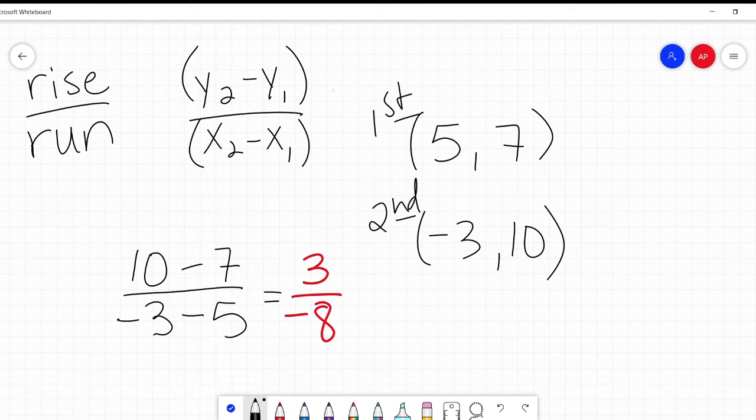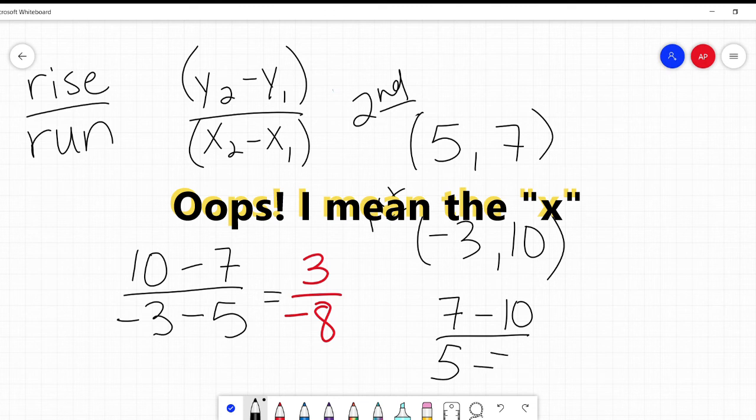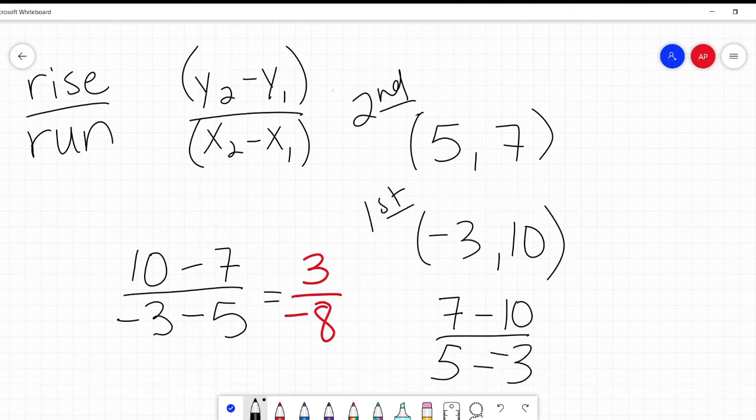All right. Let's try it again, but the other way around. Let's say if I was given this as my second point and this as my first point. Our second Y is 7 minus our first point, which is 10. And then 5 is the Y from our second point minus a negative 3. Very important that we remember minus a negative, have both of those negatives there, which is our X from the first point. 7 minus 10 is negative 3. 5 minus a negative 3 is 8. Again, negative 3 eighths is my slope.